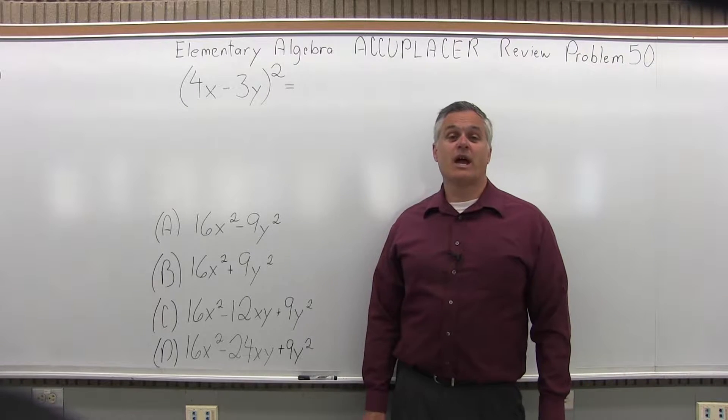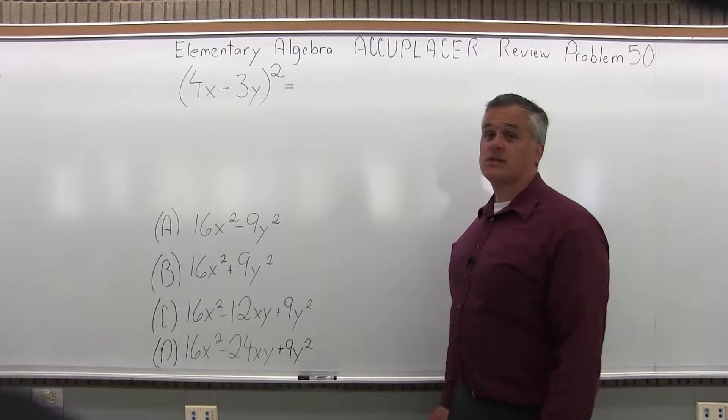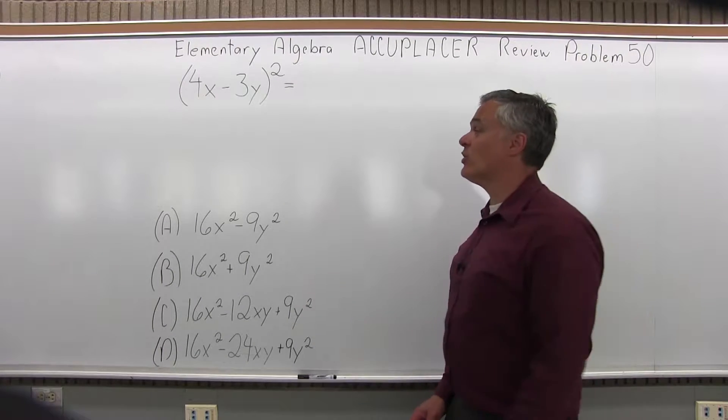This is the Elementary Algebra Accuplacer Review Problem 50. We have 4x minus 3y in parentheses, and the parentheses are raised to the second power, or squared.